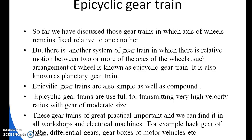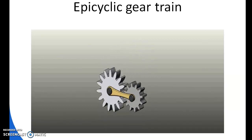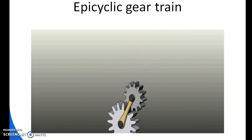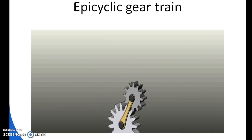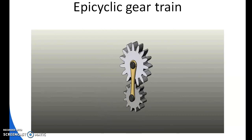These gear trains have great practical importance and can be found in workshops and electrical machines. For example, back gears of a lathe, differential gears, and gearboxes of motor vehicles are epicyclic gear trains. In the picture of an epicyclic or planetary gear train, the first gear rotates on its own axis while the second gear rotates about the periphery of the first gear — which is why it is termed a planetary gear train.